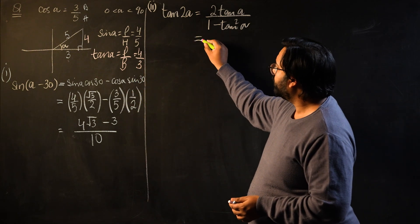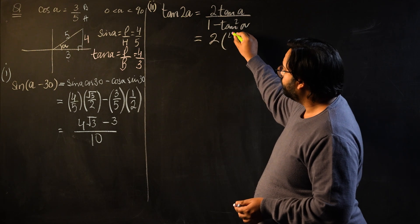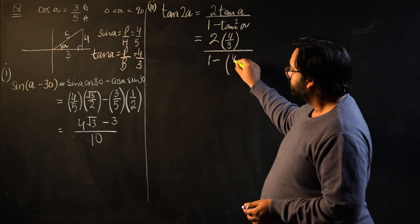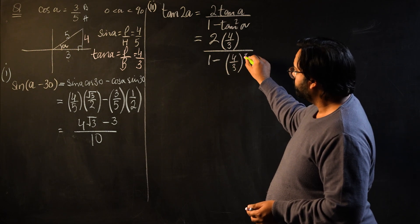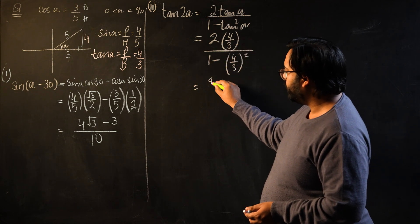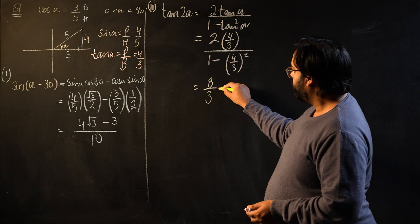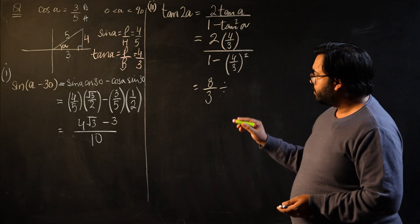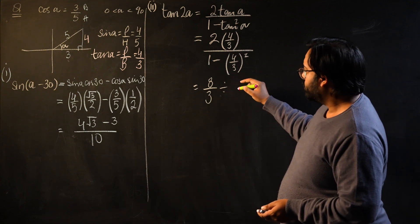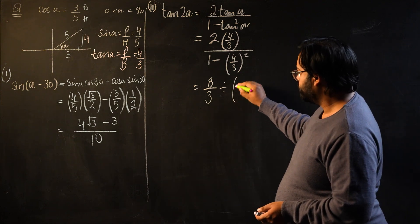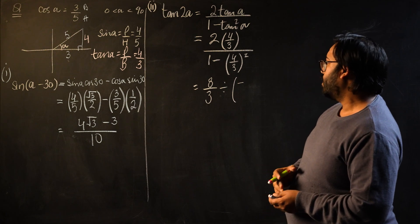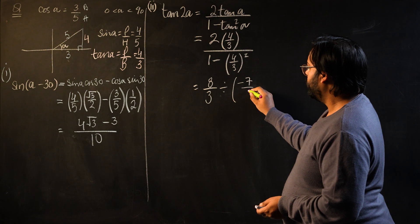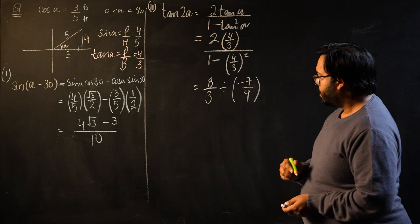This value will become 2 times tan(α) which is 4/3, over 1 minus (4/3)². So this would be 8/3 divided by 1 - 16/9. This would be negative, 9 minus 16 is -7/9.